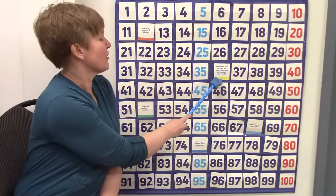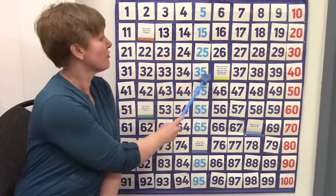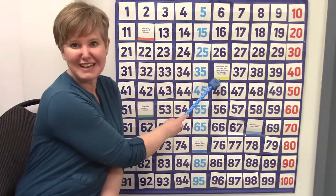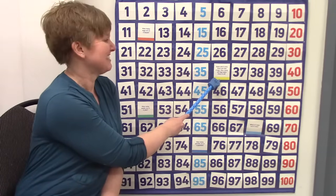What about this card? It is between 35 and 37. What number would be here? You are right. It is 36.